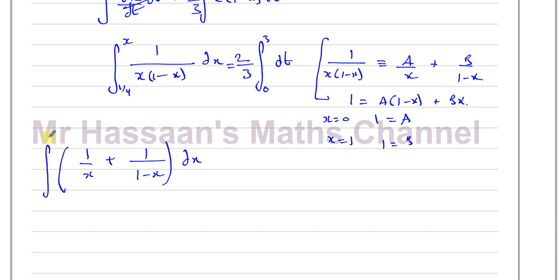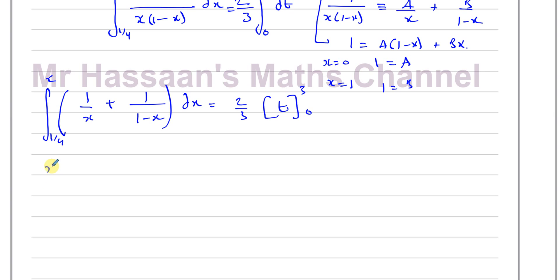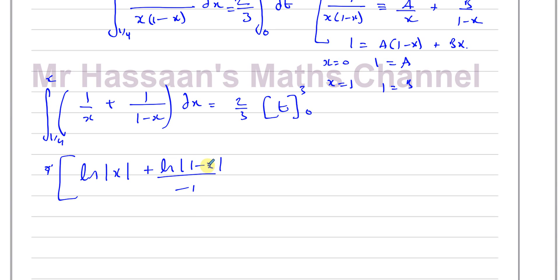Integrating: ln|x| plus ln|1 minus x| but dividing by minus 1 for the second term (because we divide by the derivative of what's inside), with limits x and 1/4, equals (2/3) times 3, which is 2. This becomes ln(x) minus ln(1 minus x), simplified as ln(x/(1 minus x)), with limits x and 1/4, equals 2.